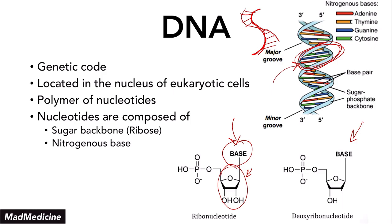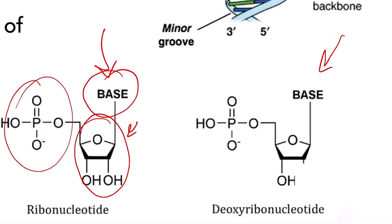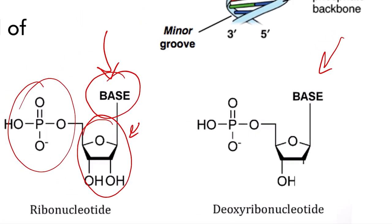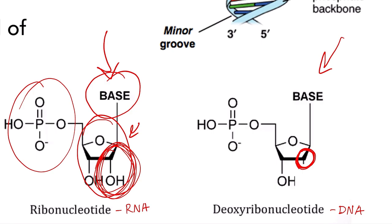These are the nitrogenous bases — the lines that are connecting these two strands. Then finally, you have a phosphate group. Now, you also need to remember the difference between a ribonucleotide and a deoxyribonucleotide. Ribonucleotides are found in RNA and deoxyribonucleotides are found in DNA. The main differentiating factor between the two is a carbon in the ribose group — in the deoxyribonucleotide, you are missing an OH group that is present in the ribonucleotide. That is the main difference. Make sure you understand that.